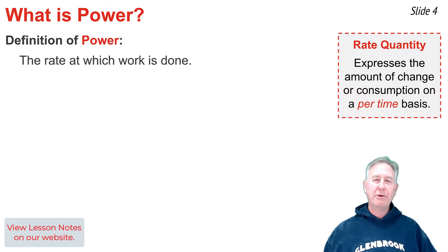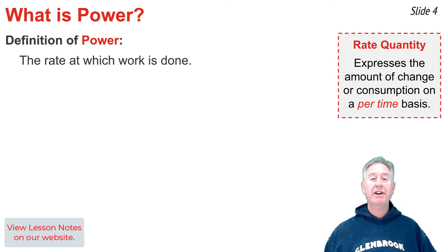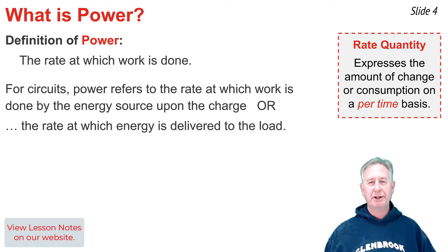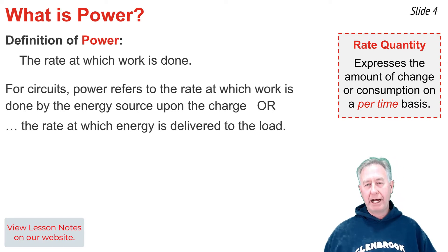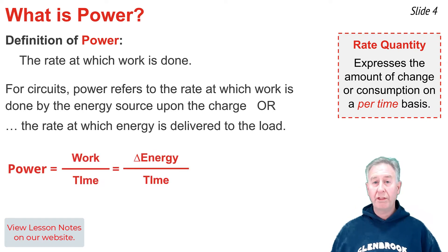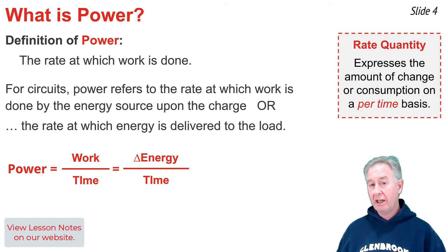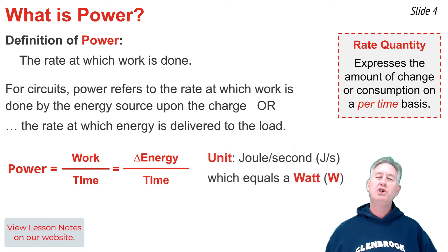In physics, power is the rate at which work is done. It's a rate quantity, and like any rate quantity, it expresses the amount of change or consumption of something on a per-time basis. Electrical power refers to the rate at which work is done by the energy source upon the charge to move it from the low energy to the high energy terminal, or the rate at which energy is delivered by the drifting charge to the load. The equation for power is work divided by time, or the change in energy divided by time. The unit of electrical power is the joule per second.